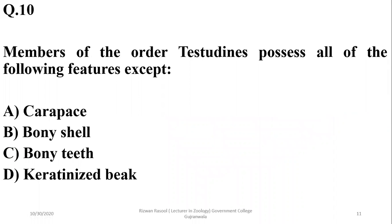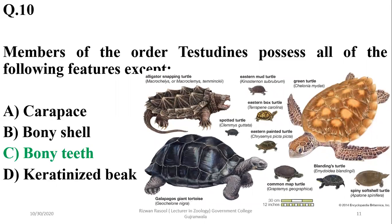Question ten: members of order Testudines — turtles — possess all of the following features except bony teeth. They have a carapace, a bony shell, and a keratinized beak, but bony teeth are not features of turtles; they are missing in this group. The correct option is charlie.